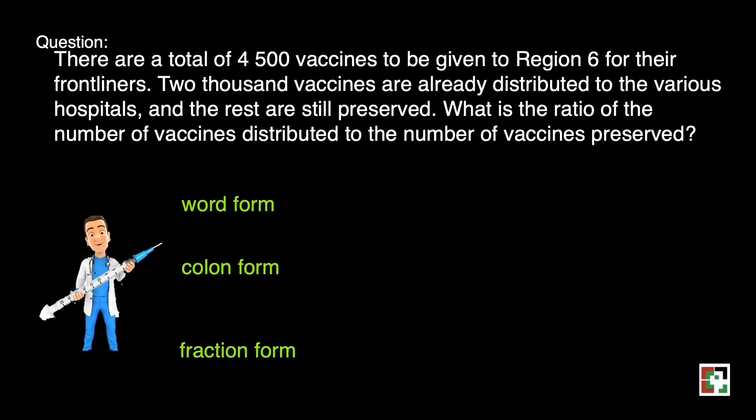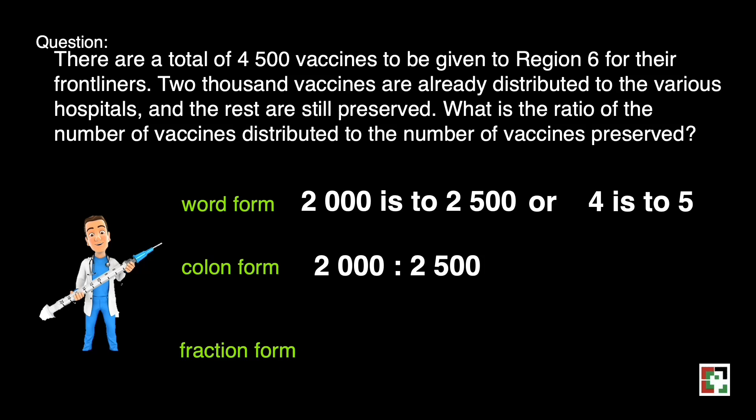Writing this one in three different ways. We have 2,000 is to 2,500 or we can do lowest term. That's 4 is to 5. For colon form, that's 2,000 is to 2,500 or 4 is to 5. And for fraction form, that's 2,000 over 2,500 or 4 fifths.